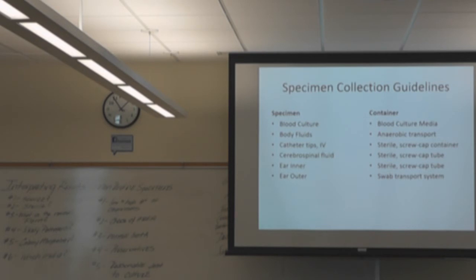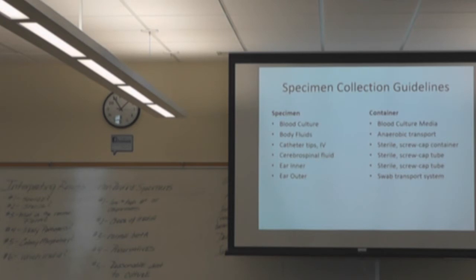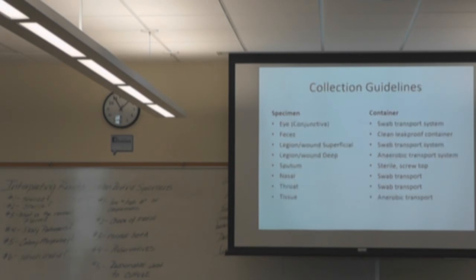Specimen collection guidelines — you need to know the specimen type and the appropriate container. Blood culture and body fluid require anaerobic transport. Outer ear still uses a swab transport system. The rest use sterile screw-cap tubes. Make sure you review those lists. Stool just needs a clean, leak-proof container. Those two slides should definitely be highlighted for studying.